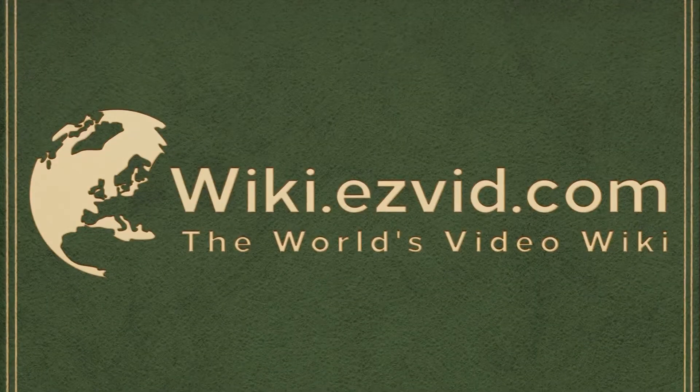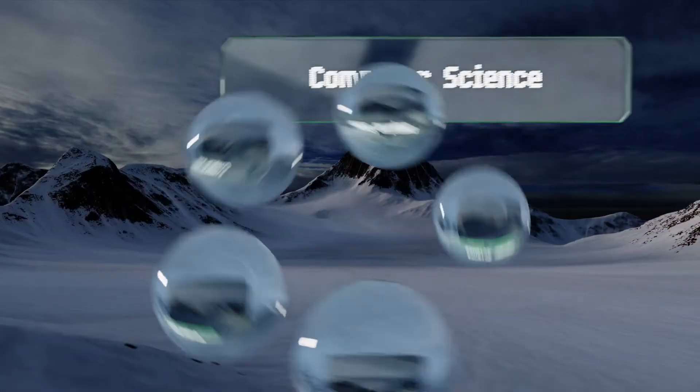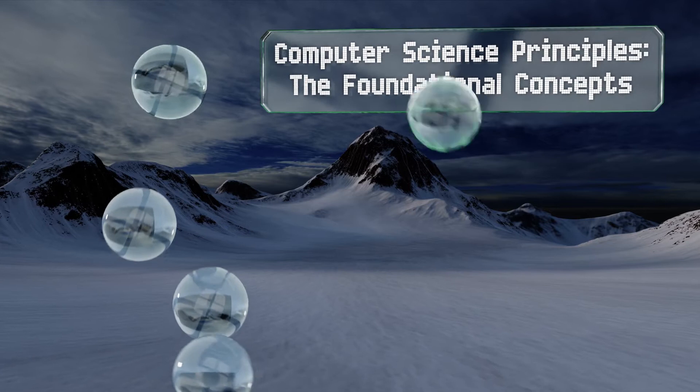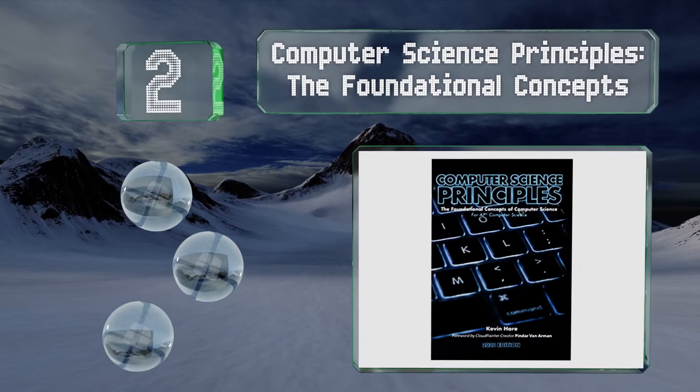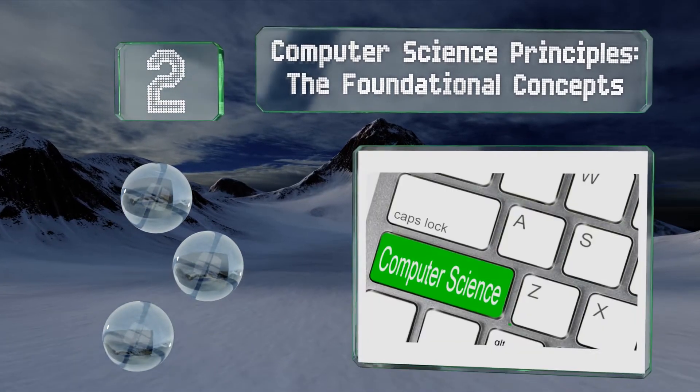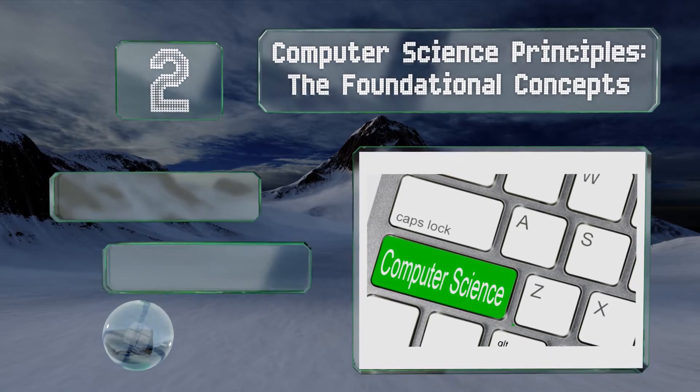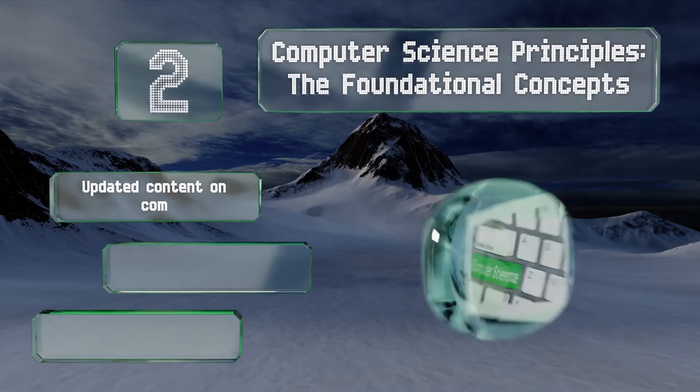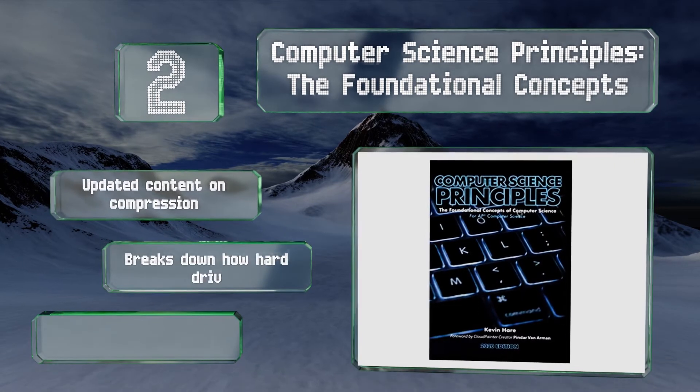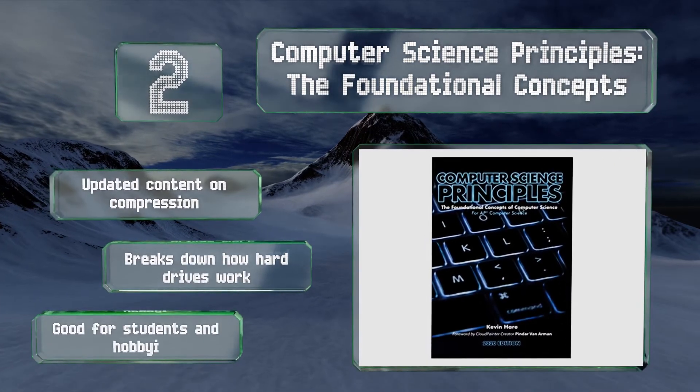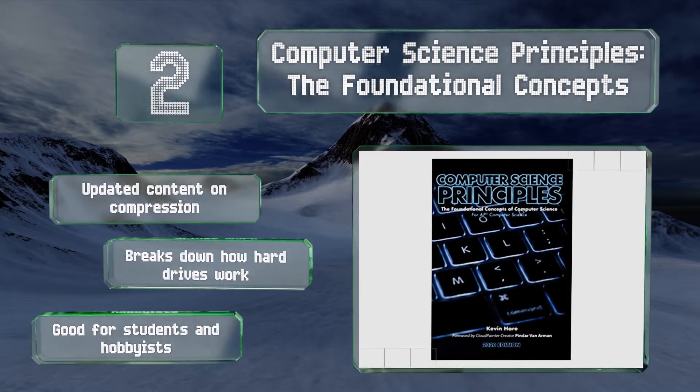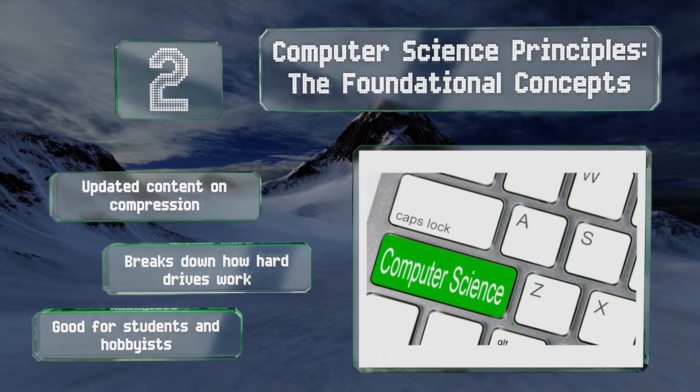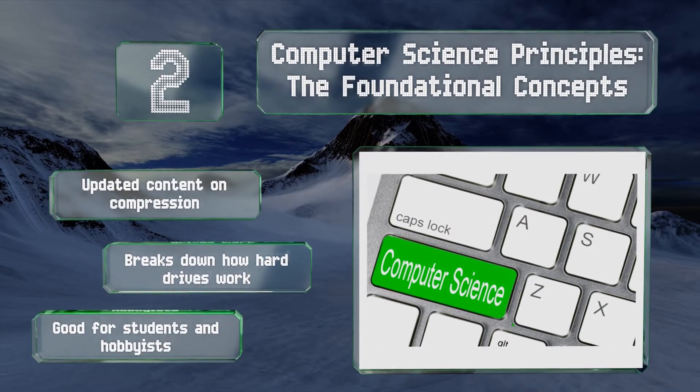At number 2, Computer Science Principles: The Foundational Concepts takes what many consider to be a complicated subject and presents it in a logical, straightforward, and easy to comprehend format. It covers a broad range of topics from coding JavaScript to what an IP address is. It includes updated content on compression and breaks down how hard drives work. It's good for students and hobbyists.